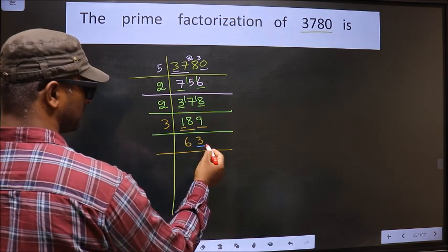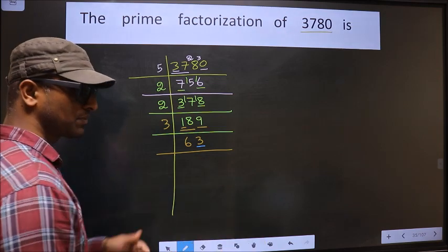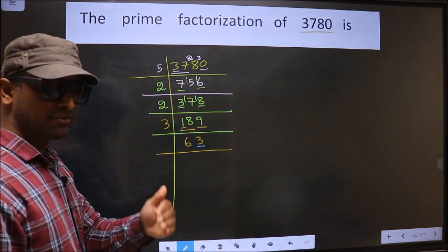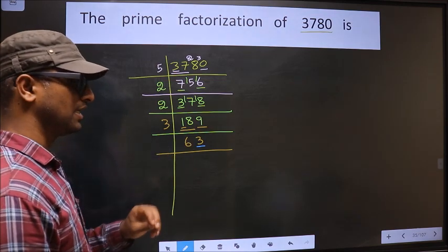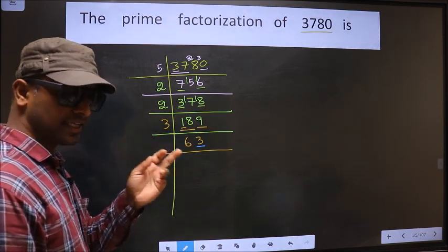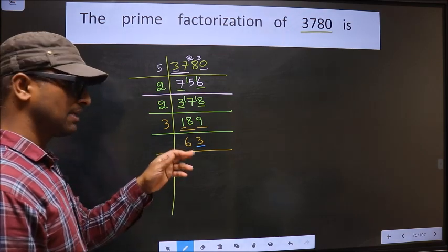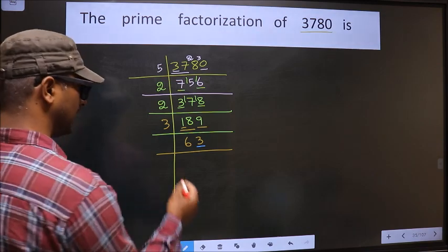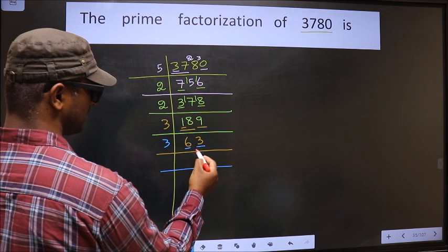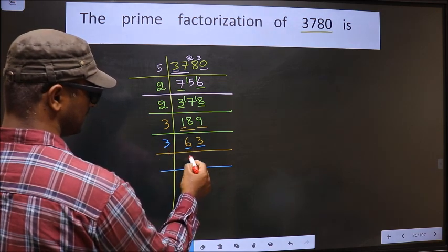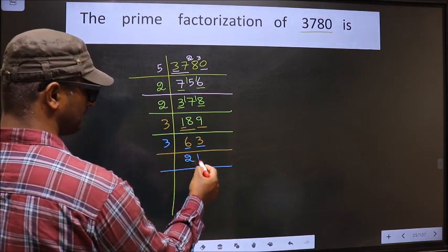Now, for this number, the last digit 3 is not even. So this number is not divisible by 2. To check divisibility by 3, we add the digits. That is 6 plus 3 = 9. Is 9 divisible by 3? Yes. So this number is also divisible by 3. So we take 3 here. The first number is 6. When do we get 6 in the 3 table? 3×2=6. The other number is 3. When do we get 3 in the 3 table? 3×1=3.